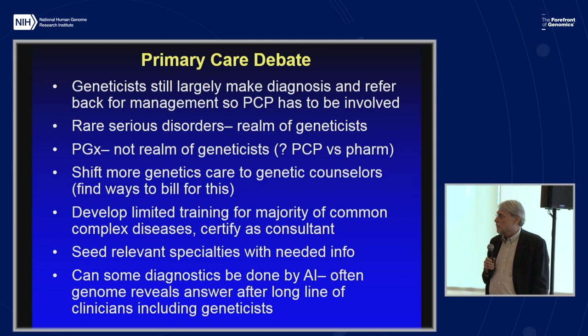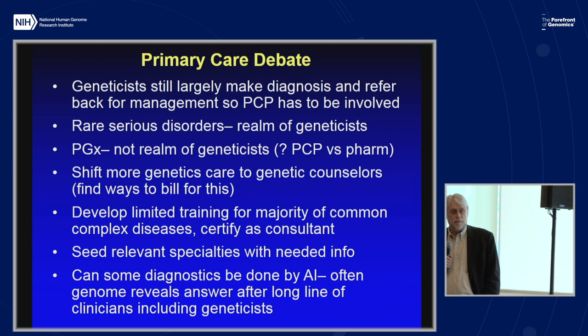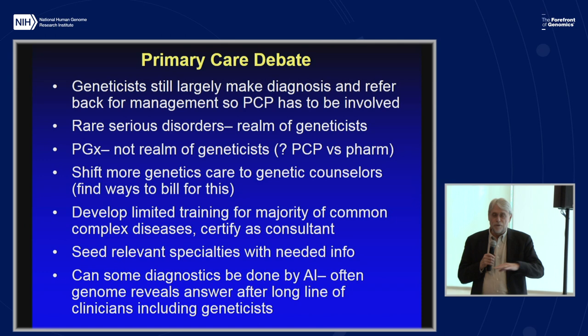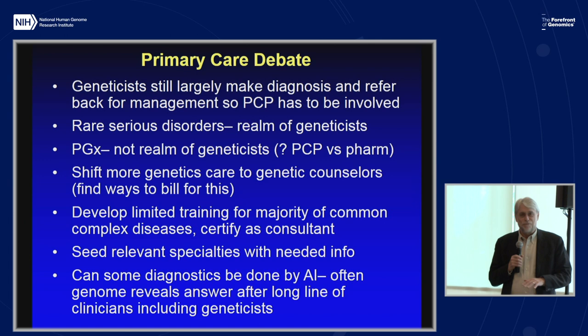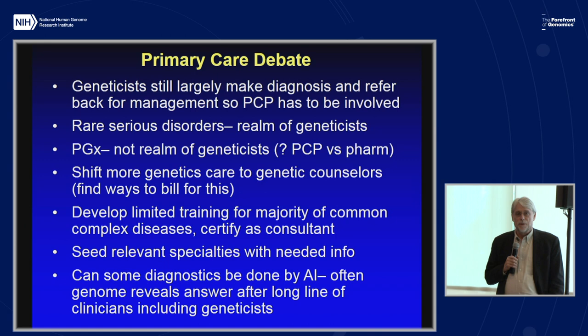There was a lot of discussion about shifting more genetics care to genetic counselors. The problem is there are a limited number of them — we've doubled the size of our genetic counseling program and still everybody gets a job before they graduate. The other key thing is we need to figure out how to bill for that, because right now billing for genetic counseling is probably on the broken side, or maybe not even existent.